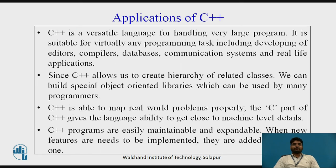Next, applications of C++. C++ is a versatile language for handling very large programs. It is suitable for virtually any programming task, including developing editors, compilers, databases, communication systems, and real-life applications. Since C++ allows us to create a hierarchy of related classes, we can build special object-oriented libraries which can be used by many programmers. C++ is able to map real-world problems properly. The C part of C++ gives the language the ability to get close to machine-level details. C++ programs are easily maintainable and expandable. When new features are added to be implemented, they are added to the existing ones.